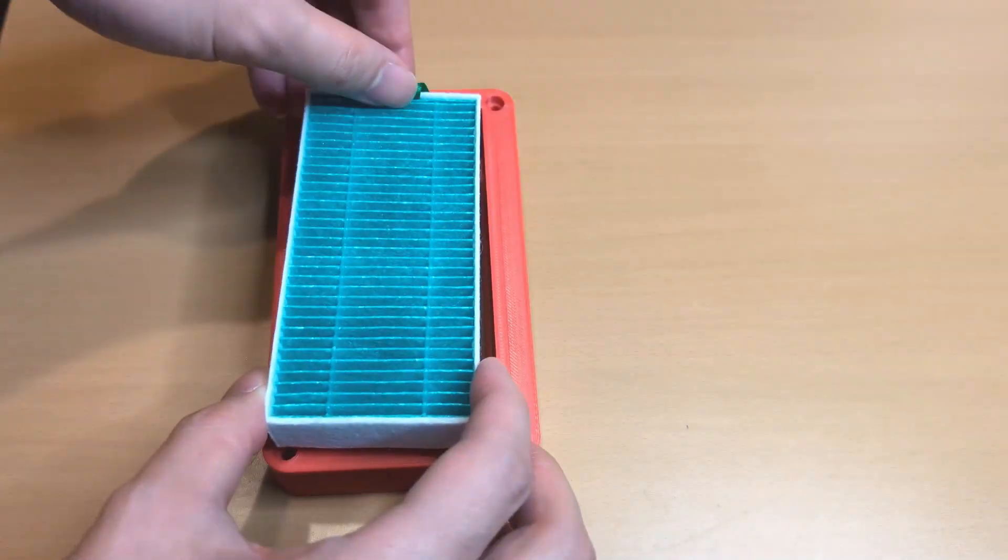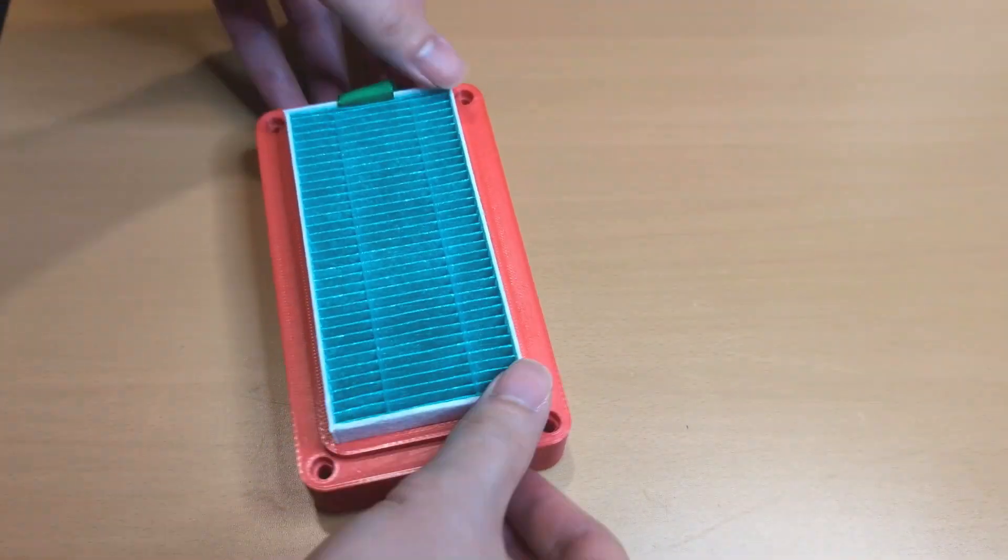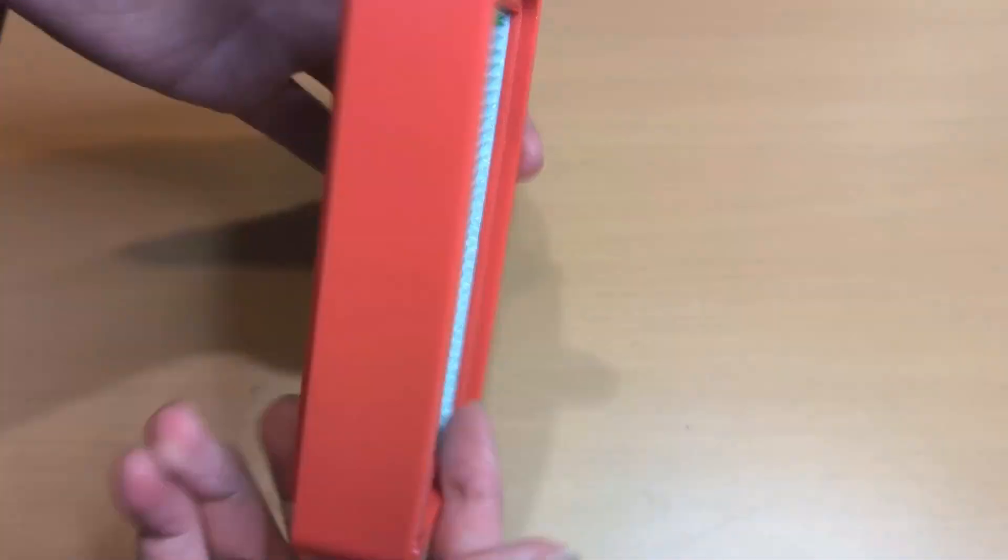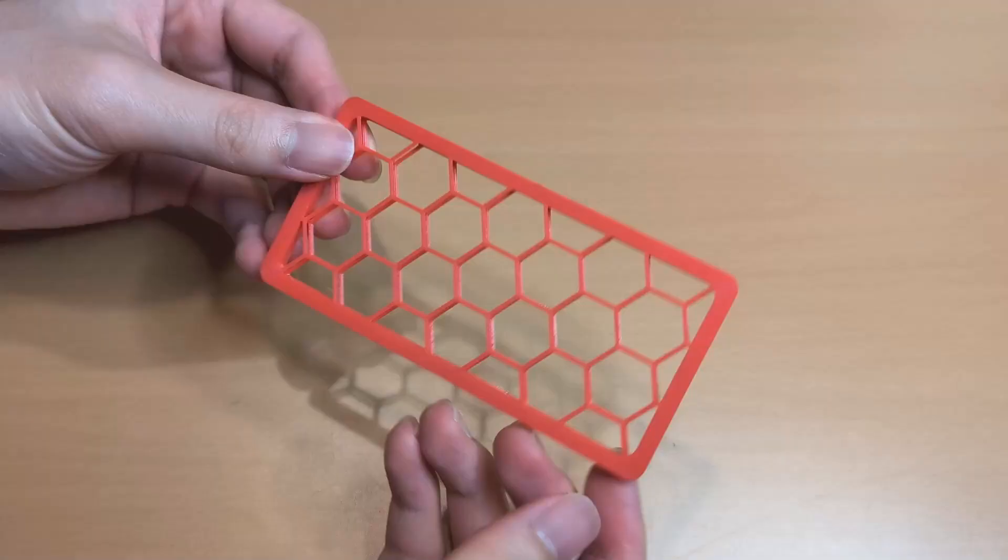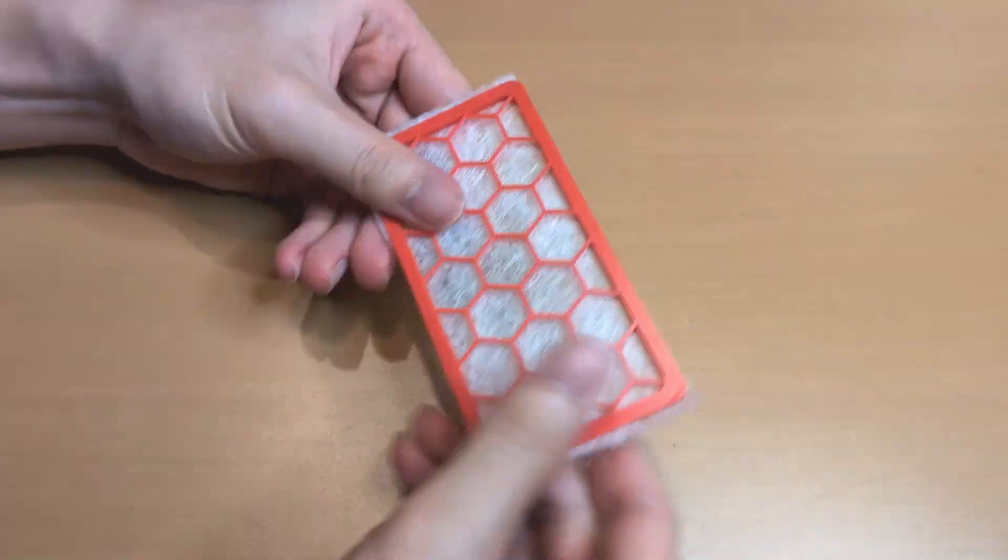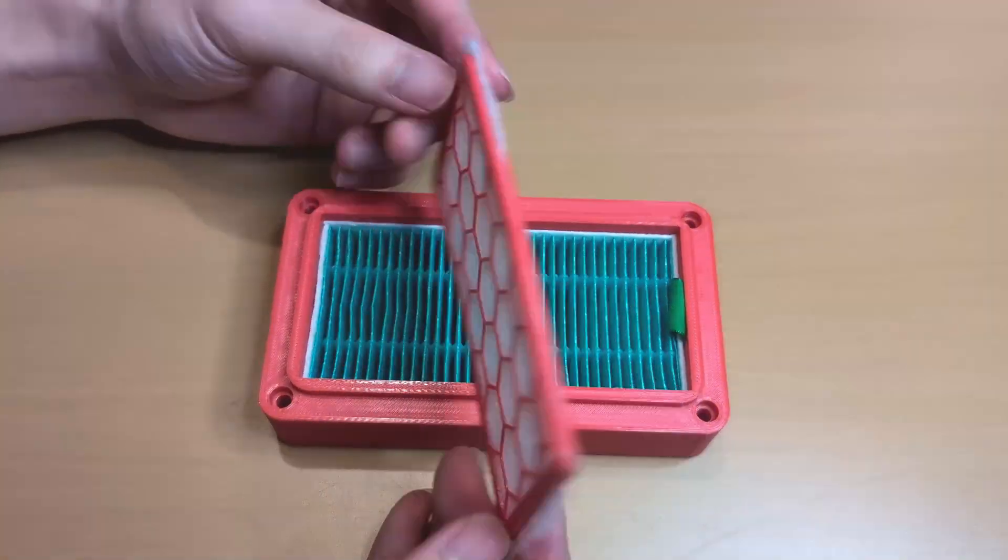The case for the filtration system must maintain its shape despite varying pressures inside and outside. Additionally, the material should withstand the high temperature generated within the 3D printer enclosure given the airtight design required for the filter cartridges.